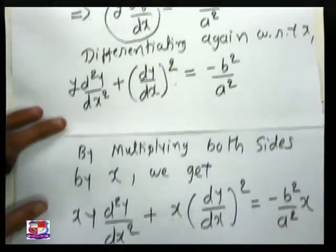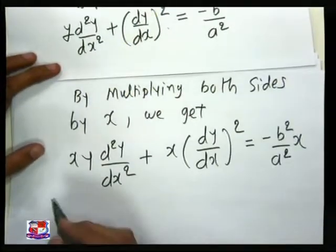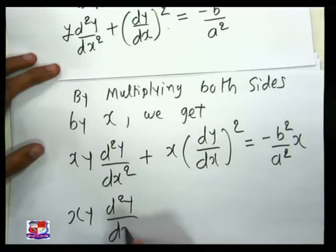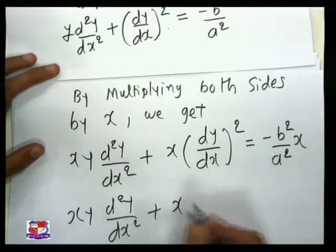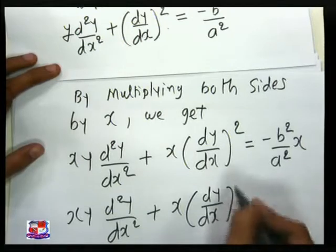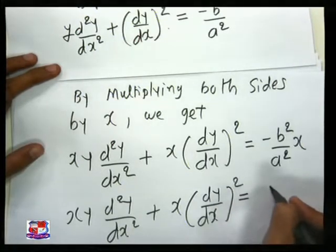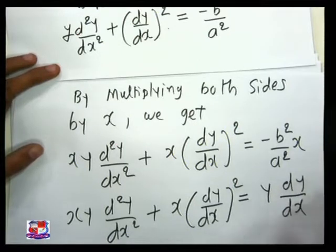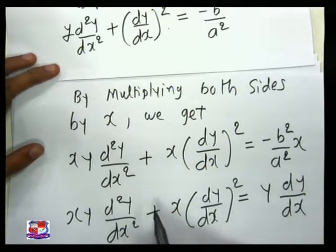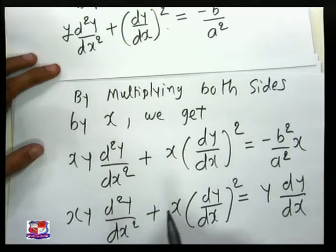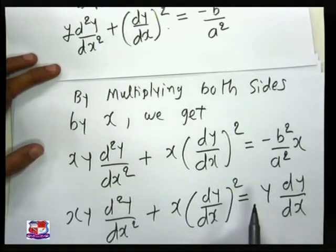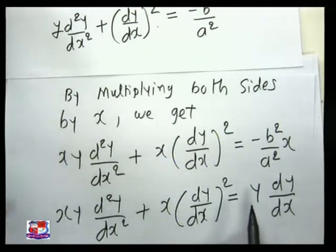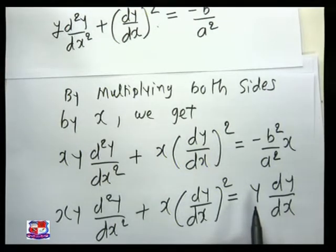We will get x·y·(d²y/dx²) plus x·(dy/dx)² is equal to y·(dy/dx). Now in this equation there is not any arbitrary constant.